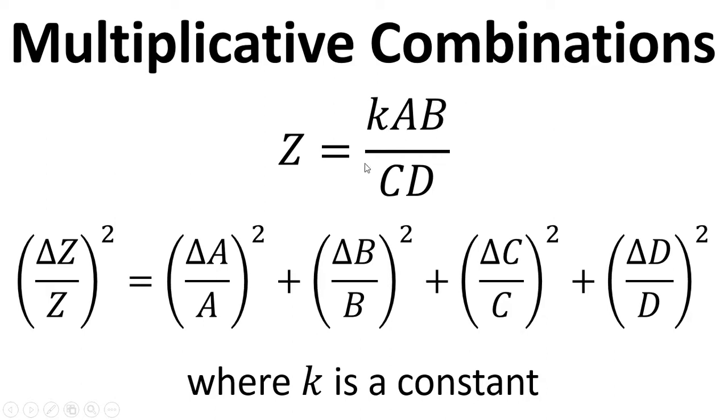times A times B, divided by C times D. And so for any extra term, whether we're multiplying them or dividing by them, we just add on these extra terms here.